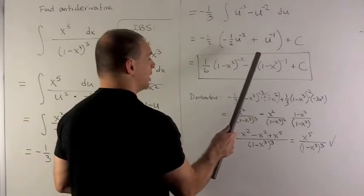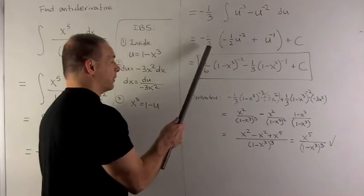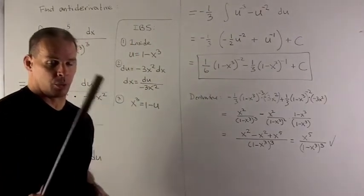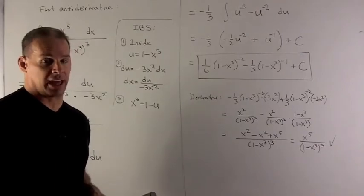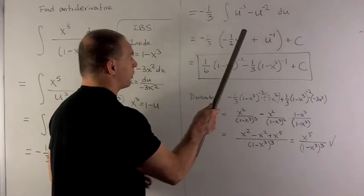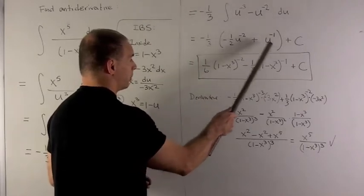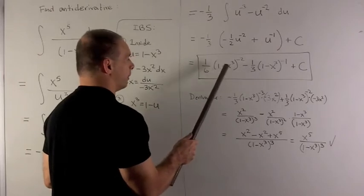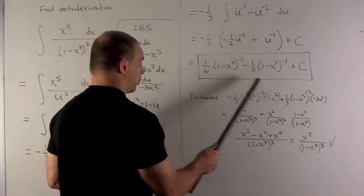I parentheses all of this to make sure my minus 1 third distributes correctly or we'll get a wrong answer when we check at the end. Okay, take the antiderivatives. Perfectly good here and so I just substitute back in u equal to 1 minus x cubed and then we're done.